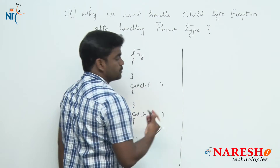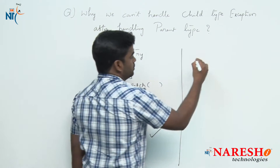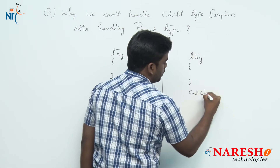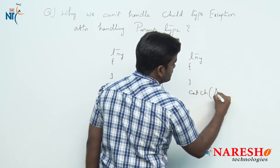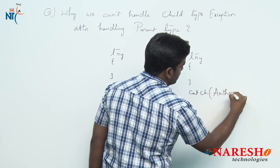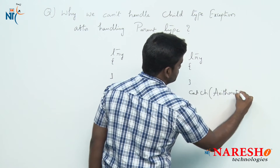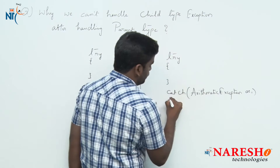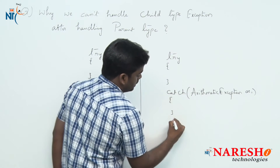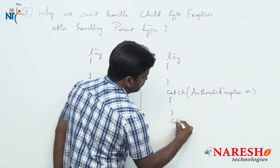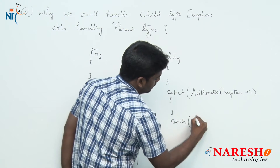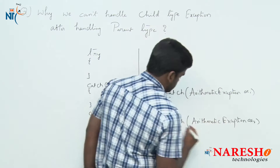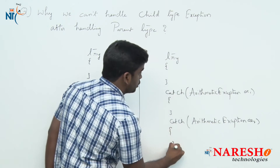Next, one problem: using one try block you cannot handle the same exception more than one time. For example, if you handle ArithmeticException and then try to handle ArithmeticException again, that is not allowed.